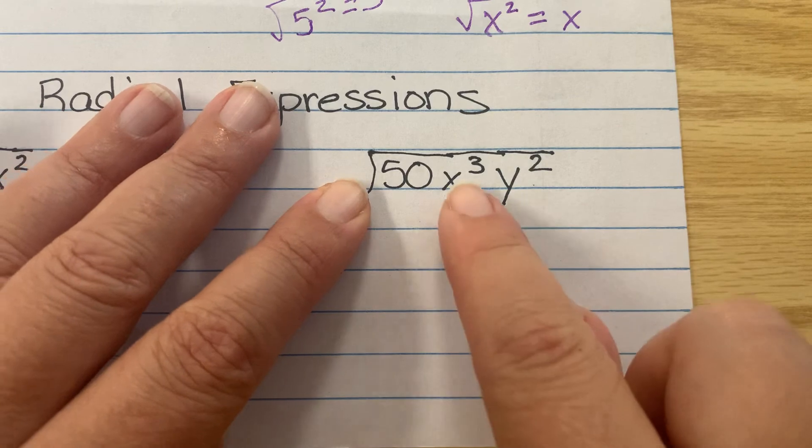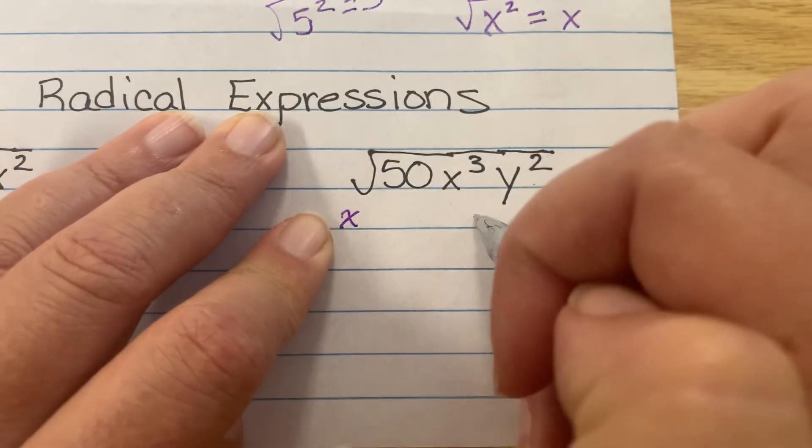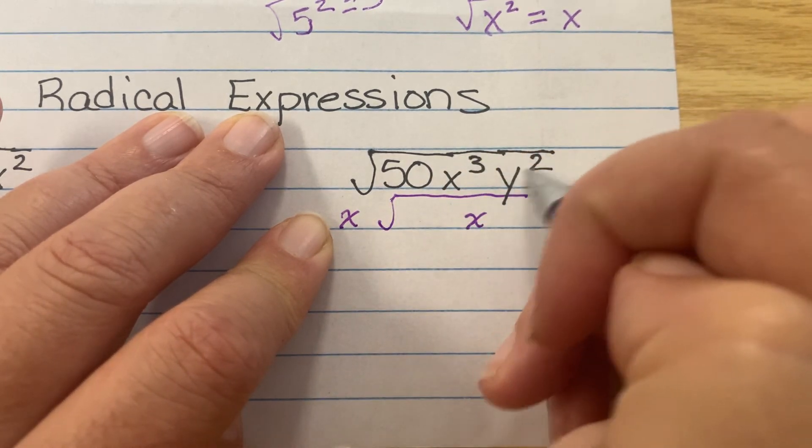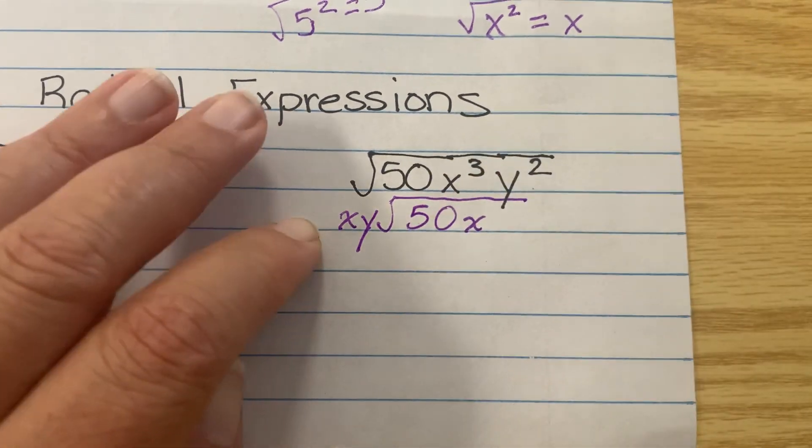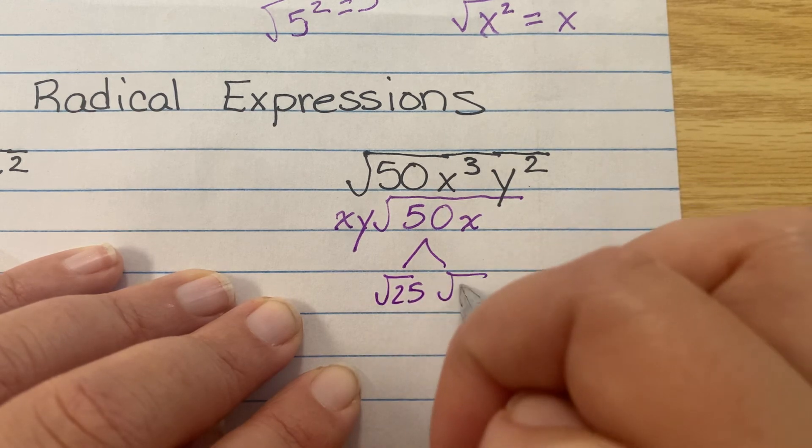And then over here, we can take 2 of these x's out, but 1's going to stay inside the square root. The y, we can take those two out and make it 1. And then I'll deal with the 50 after. The 50 would be square root of 25 times 2, so 5xy square root of 2x.